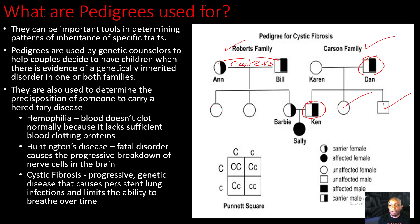If we look in the Roberts family, they have a normal daughter, another normal daughter. But notice that Barbie is also a carrier for cystic fibrosis. To clarify — since they're carriers, this doesn't mean that they have cystic fibrosis, but it does mean that they can pass it on to their offspring. So when Barbie and Ken mate and have their daughter, their daughter Sally actually does have cystic fibrosis. Barbie and Ken are both carriers, so they've increased the likelihood that Sally has cystic fibrosis.